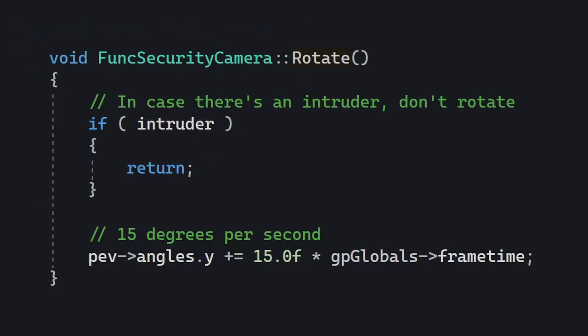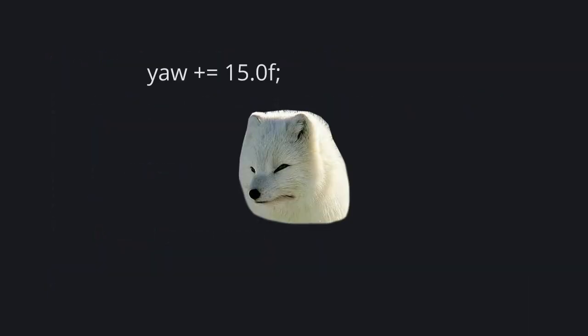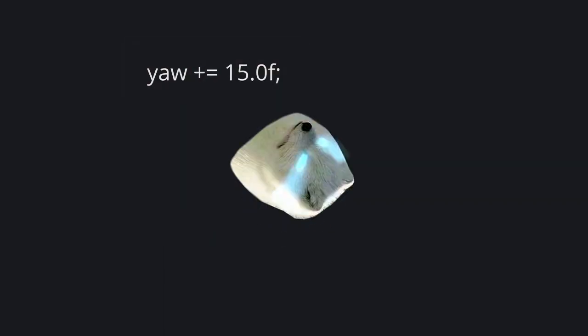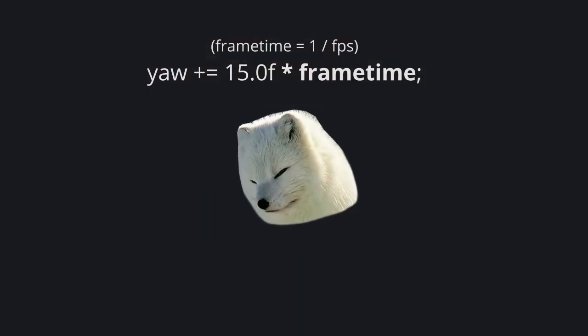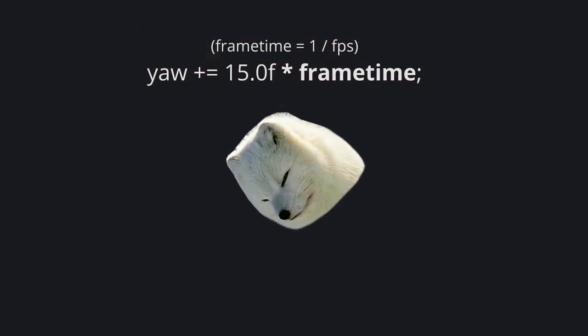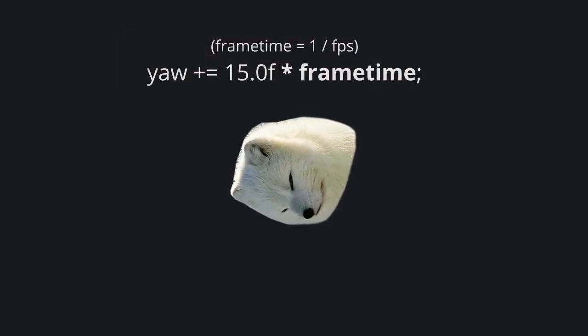For the rotation logic it's super simple. We are multiplying the number 15 by frame time, because this is called every frame — approximately every 16 milliseconds. Imagine what would happen if you added 15 degrees every fraction of a second: that would spin crazy fast. So we multiply by the frame time, which is a pretty small number that will balance this out for us.